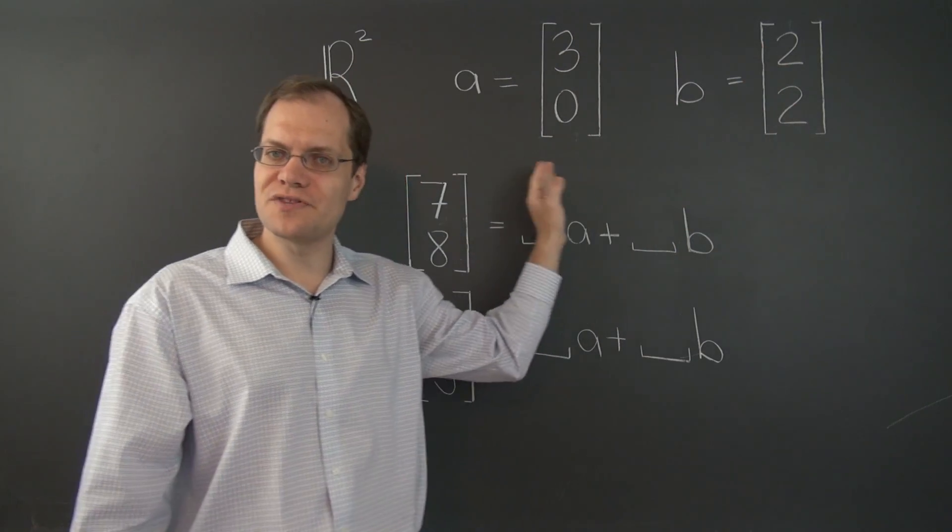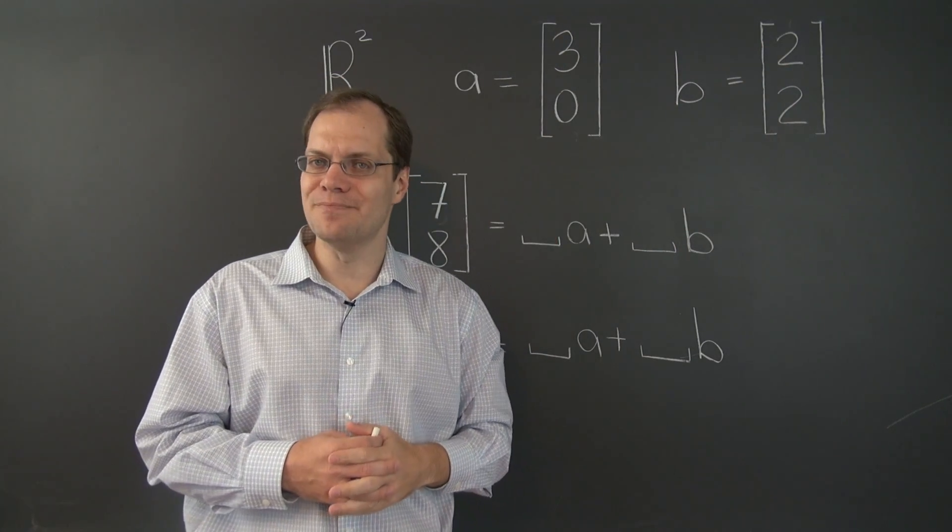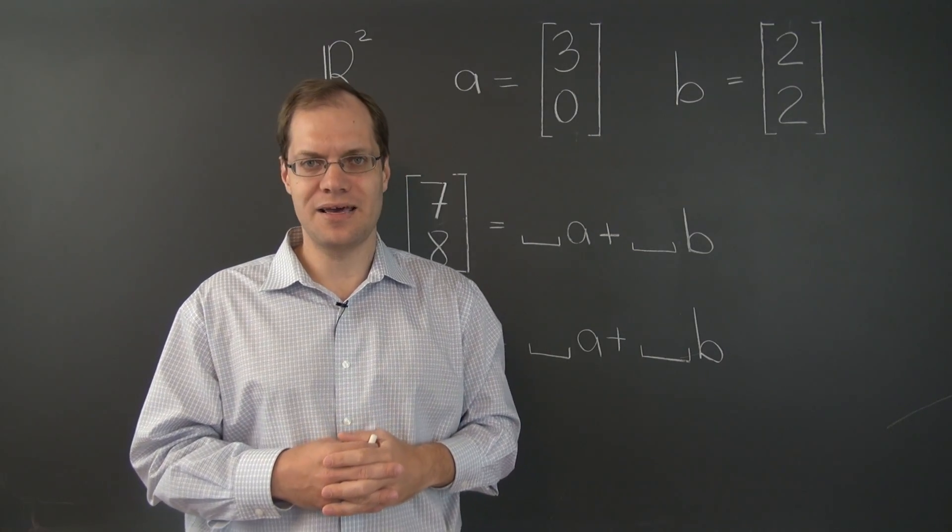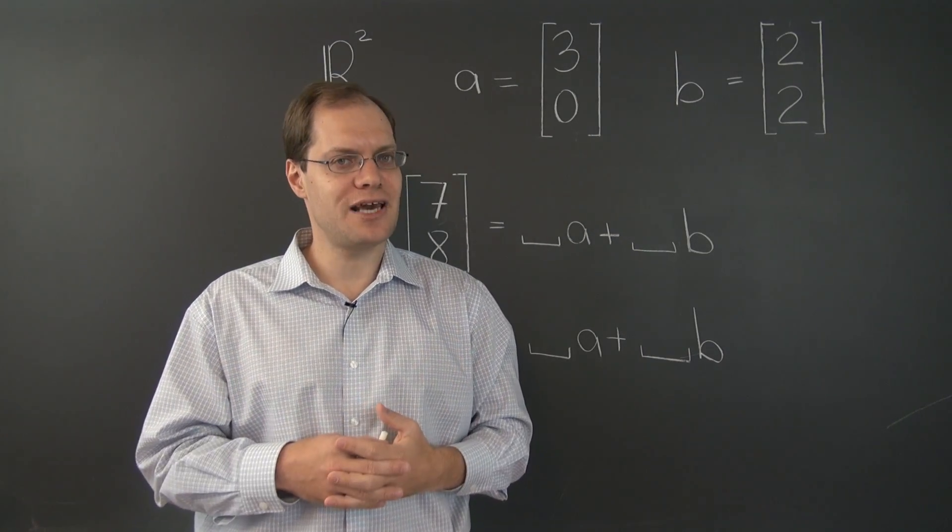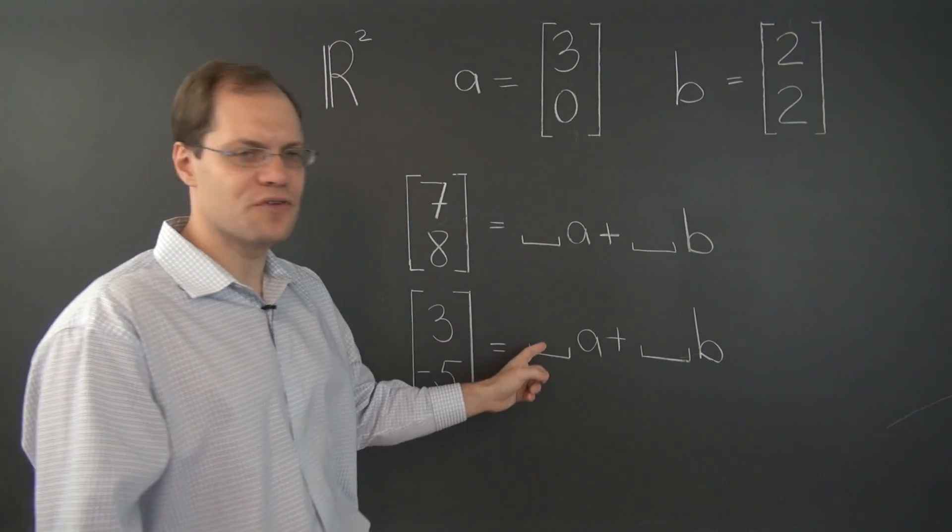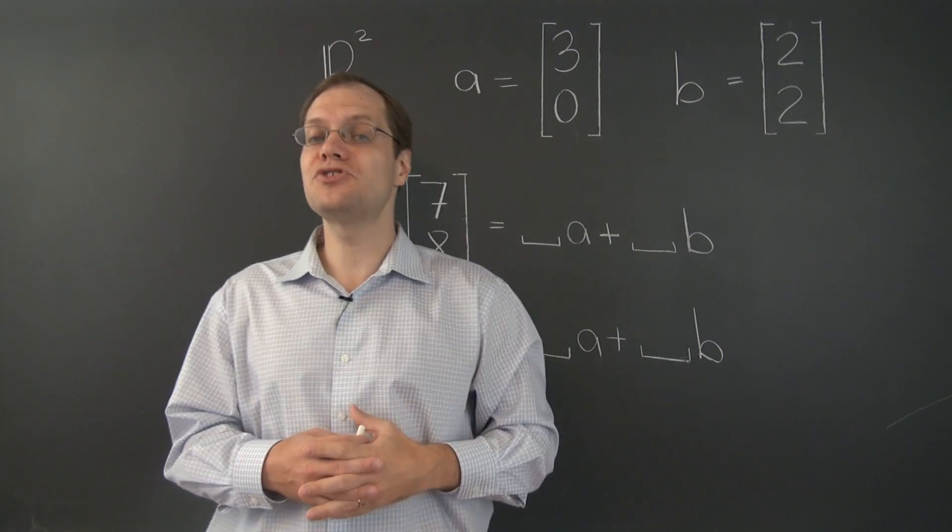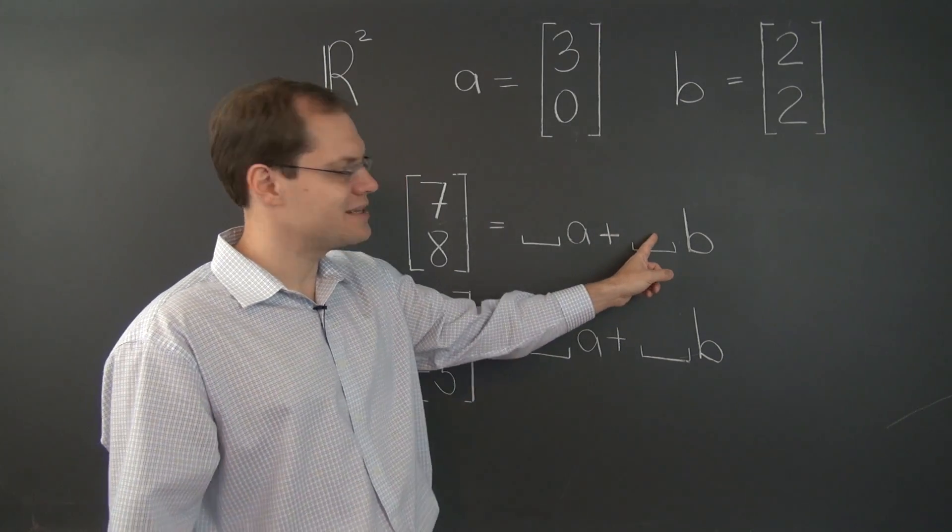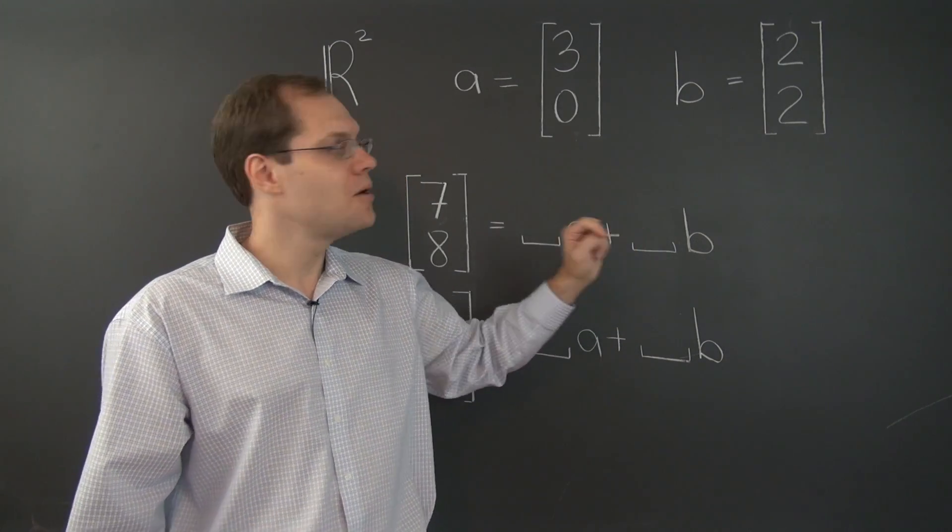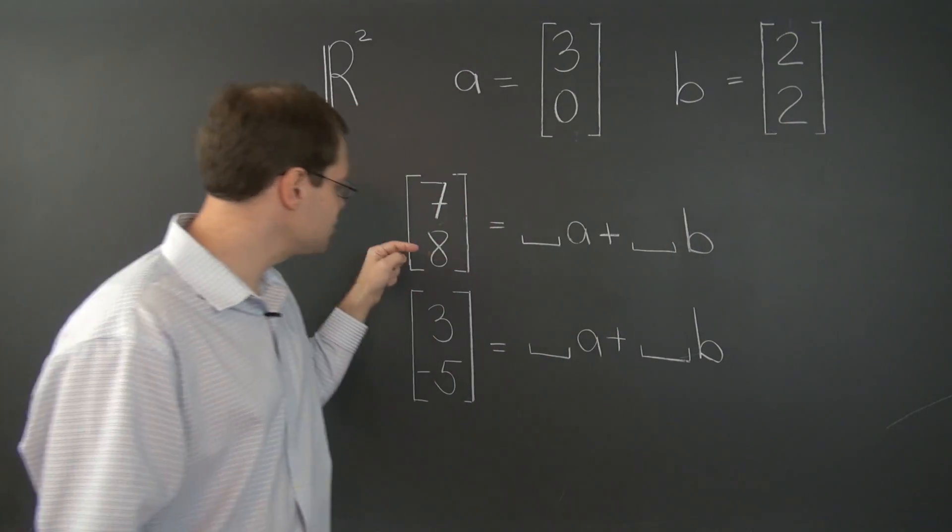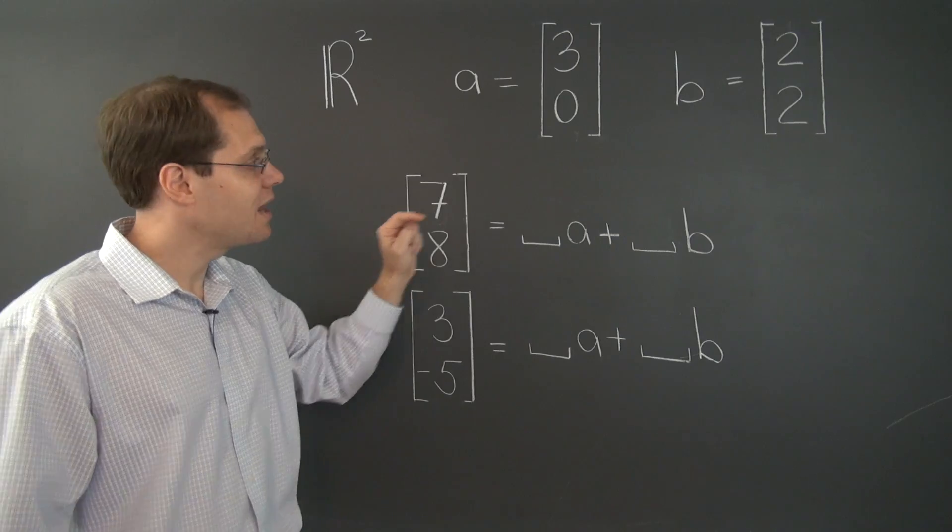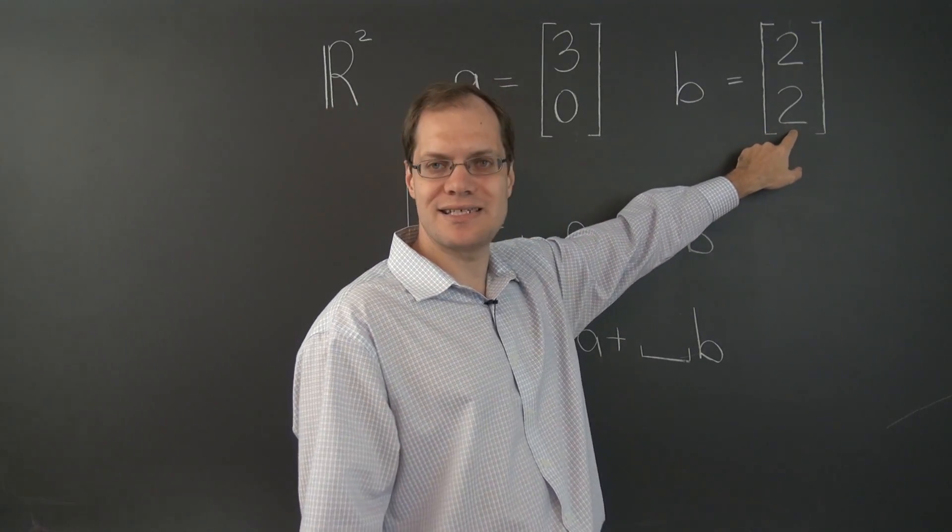But the overall structure of the vectors A and B remained the same. Therefore, our strategy will also remain the same. The only things that will change is the values of the coefficients. So let's pursue the same strategy as we did before and start by determining the second coefficient by using B to match the second entry in the vector on the left. Because B now has a 2 in the second entry, we must take 4 of B.